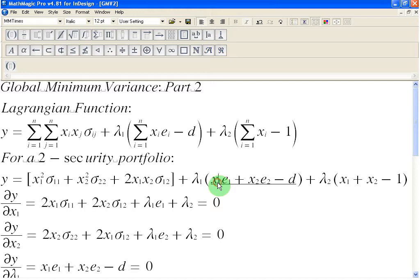Then, in this term, we have an X1 here. And when we differentiate, we are going to get Lambda 1 times E1, which is this. And when we differentiate with respect to X1 here, we are going to get Lambda 2, which I have here. And then I have set it equal to 0.